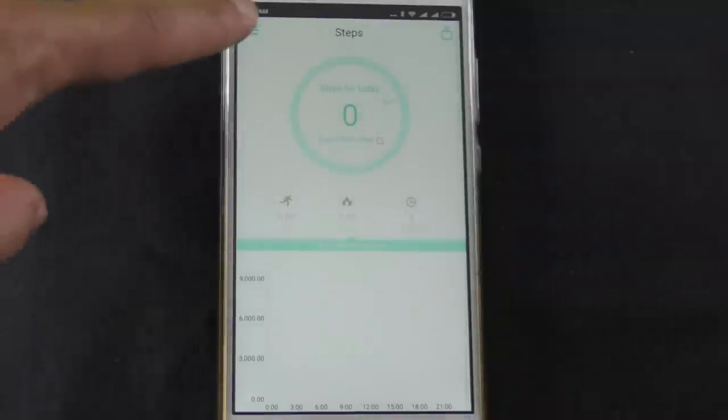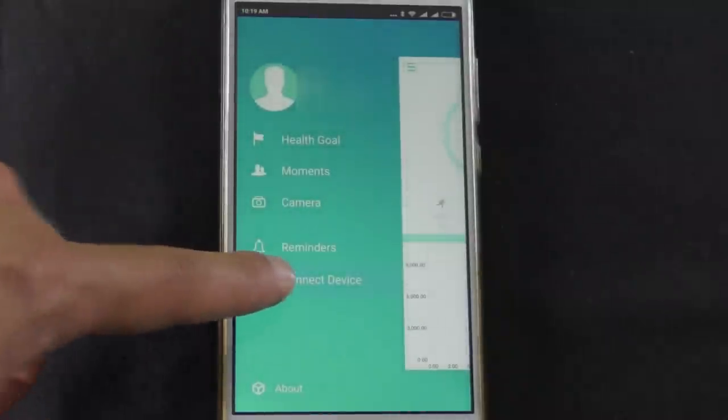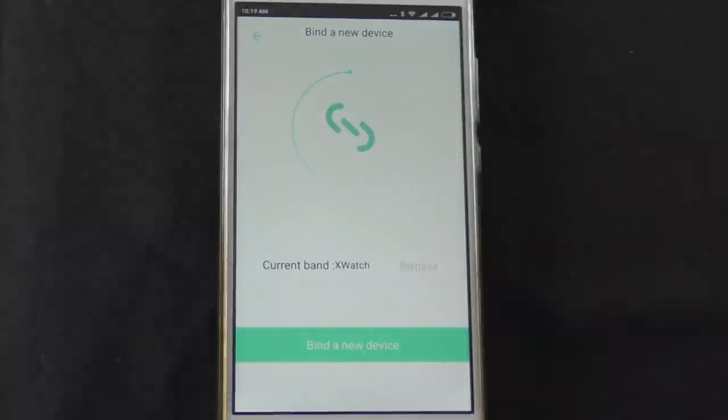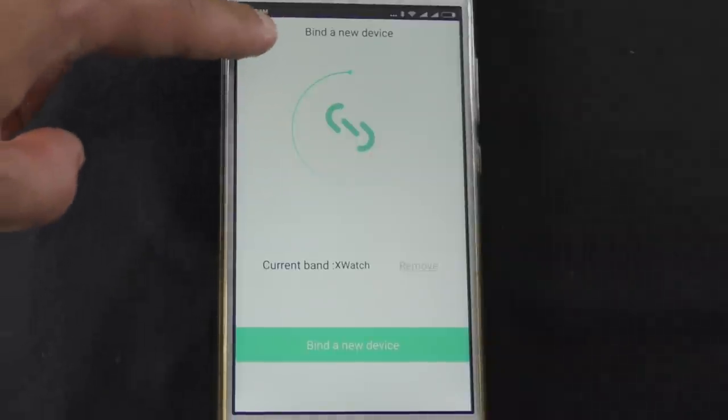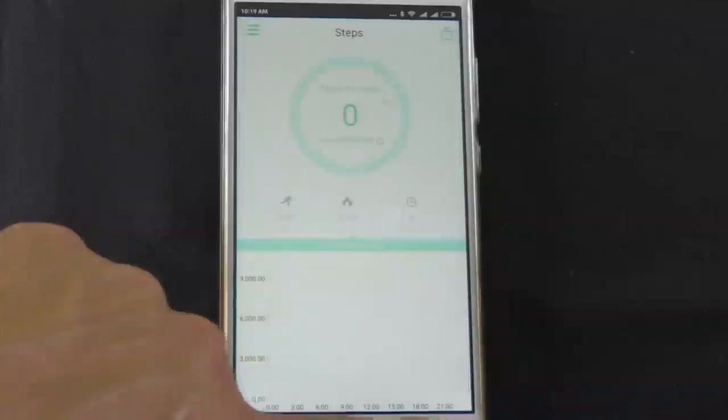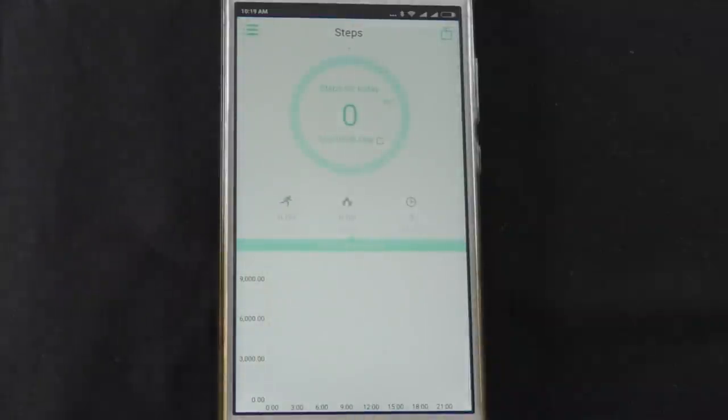For the watch to synchronize with the app, you must enable the Bluetooth connection in both the watch and your smartphone or tablet. To pair between the devices, go to the main menu, choose connect device, then choose to bind a new device and choose X Watch. You only need to pair the watch once with your smartphone or tablet, and from that moment it will connect automatically when launching the app.